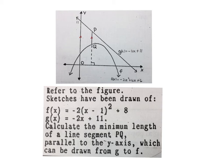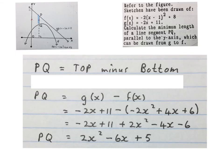Here's the last question. They gave us this sketch with a parabola and its equation and a straight line and its equation. The question reads: refer to the figure, sketches have been drawn of f(x), that's the parabola, and g(x), the straight line. Calculate the minimum length of a line segment PQ, that line there, parallel to the y-axis, which can be drawn from g to f. So they want the minimum length of the line PQ. I'm not going to spend a lot of time on this. To find PQ's expression, I go top minus bottom. So PQ is g(x) minus f(x), this one minus this one, filled it in, simplified it, and got the expression for PQ.